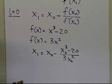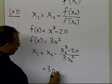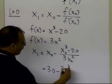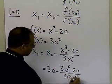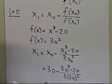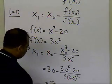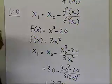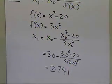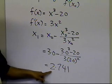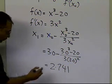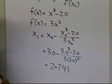Since it has been given to me that the value of x0 is 3.0, I'll just substitute the value of 3 in there, and this value turns out to be 2.741. So I started with the initial guess of 3, and what I'm getting is the value of x1 — my next estimate of the root of the equation — to be 2.741.